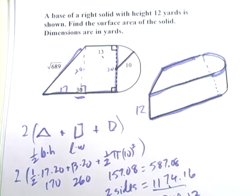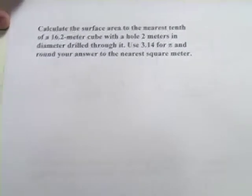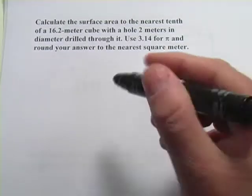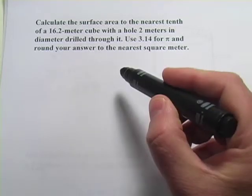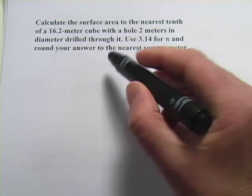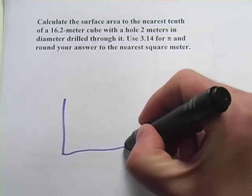Alright, let's try one more. Alright, this is a tricky one. It says, calculate the surface area to the nearest tenth of a 16.2 meter cube with a hole 2 meters in diameter drilled through it. So let's think about this for a second. So you've got a big cube.